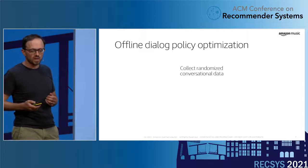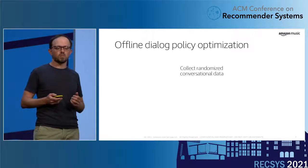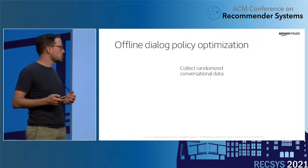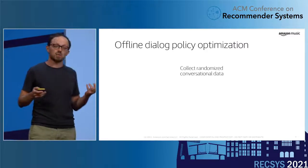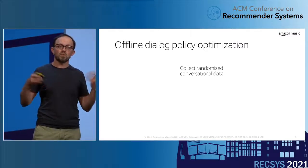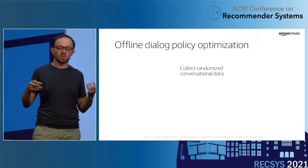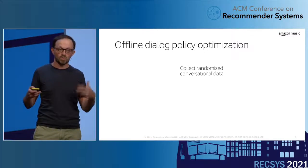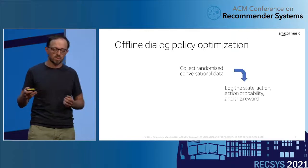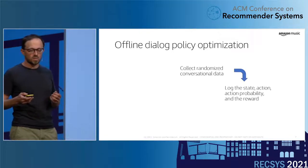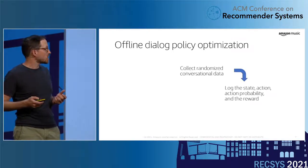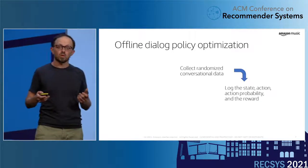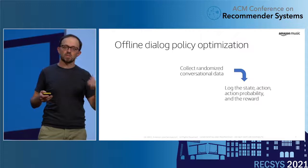This is part of a larger offline policy optimization framework in which we start by collecting some randomized conversational data with live users. Then we make sure we log the state, the action, the action probability, and the reward at every step of the conversation.